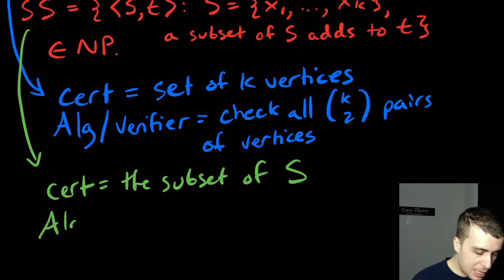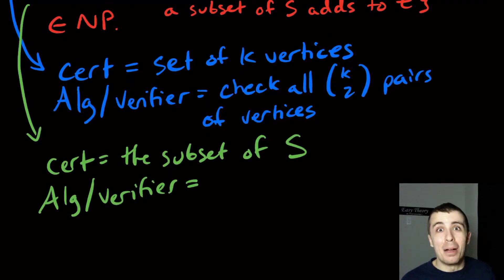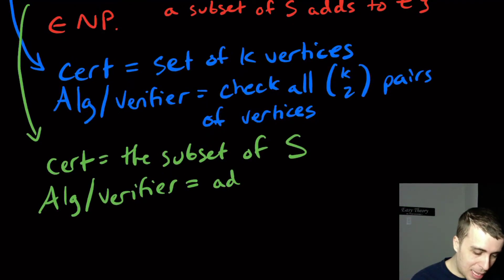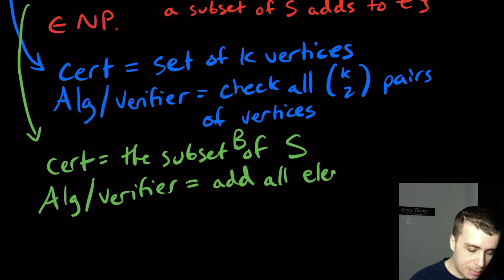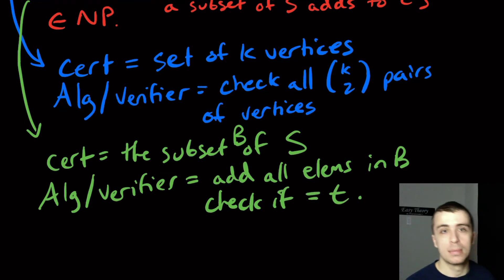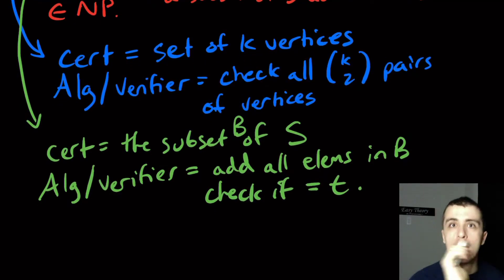And then what would the algorithm or verifier do? Well, what they would have to do is just add up all the integers. So add all elements in B, the subset, then check if that equals t. So it's pretty straightforward. We have to be sure that this runs in polynomial time.